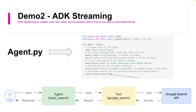We will install the ADK again, set up a basic Google Search agent, and run it using the ADK web tool, which is a kind of GUI tool, to see how the agent responds and answers queries. If you're following along, your environment is already set up. You can create a virtual environment, activate it, and install ADK using pip install google-adk, then follow the same project structure.